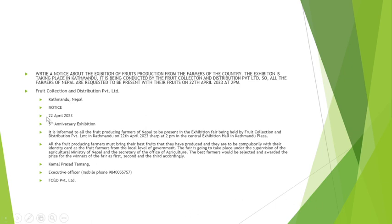In the notice format, the organization name — Fruit Collection and Distribution Private Limited — should be centered at the top. Below that comes the word 'NOTICE' in the center, followed by the date: 22nd April 2023. The title 'Fifth Anniversary Exhibition' and the location 'Kathmandu, Nepal' should also be centered.